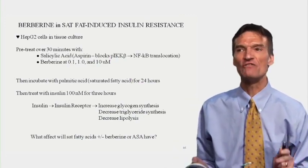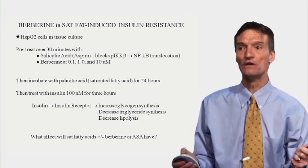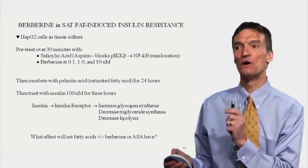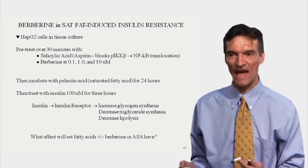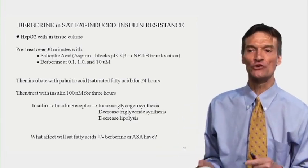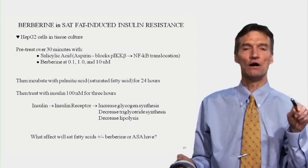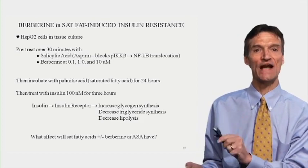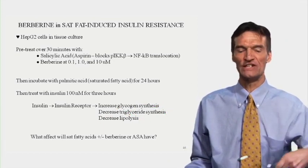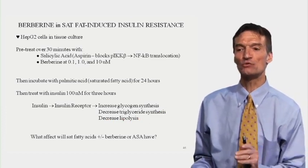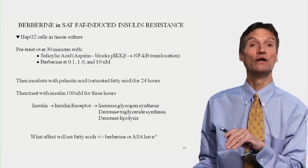Another study of berberine and saturated fatty acid-induced insulin resistance. Take our HepG2 cells, pre-treat for 30 minutes with salicylic acid — aspirin — to block activation of Queen Jadis/Icpokinase and blunt translocation of nuclear factor kappa-beta, or with berberine at increasing doses. Then incubate with palmitic acid to cause insulin resistance, then treat with insulin for 3 hours. Intact insulin function would be manifested by increased glycogen synthesis, decreased triglyceride synthesis, and decreased lipolysis. What effect will saturated fatty acids plus or minus berberine or aspirin have on these markers of insulin sensitivity?